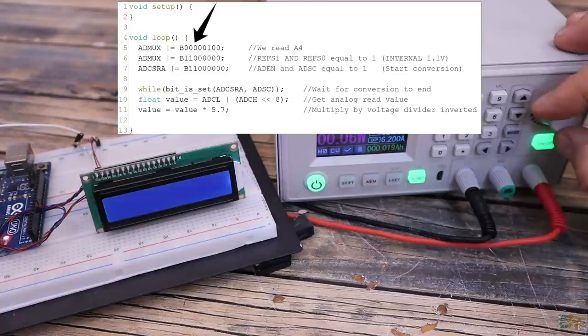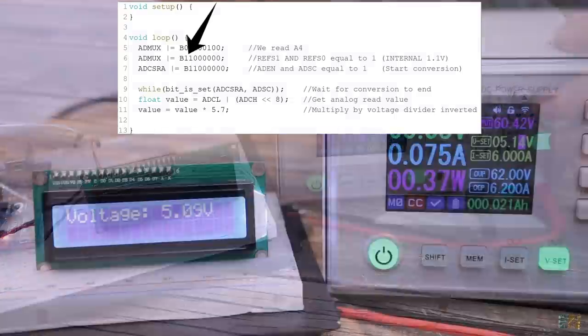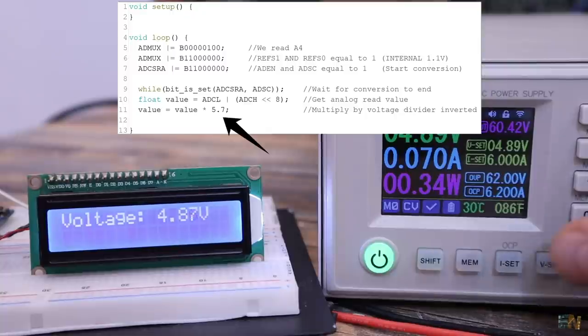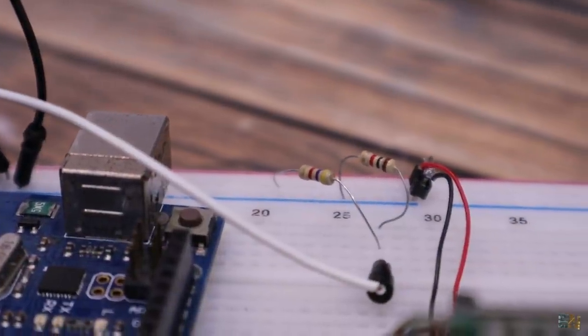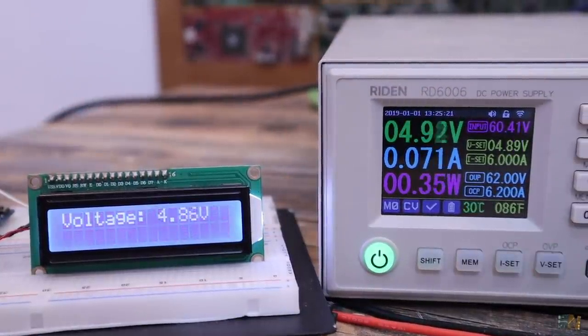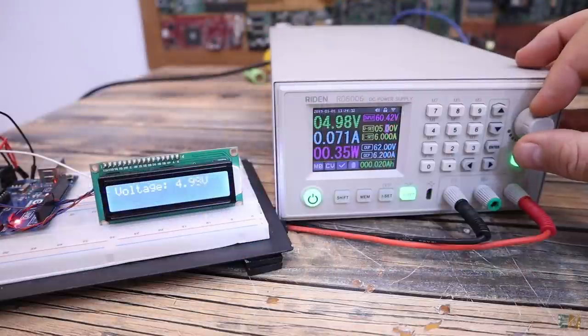But now I run this code where I define the internal reference of 1.1V. I also multiply the read by the inverted value of the voltage divider which is made with a 1K resistor and a 4.7K. Now when I change the supply value, the value on the screen changes as well so we have solved the problem.